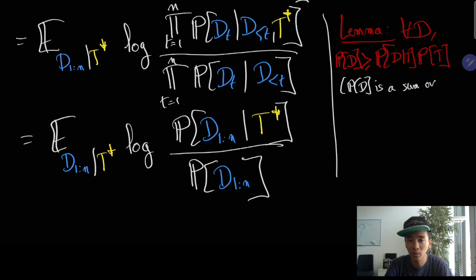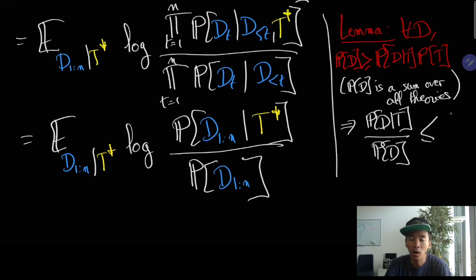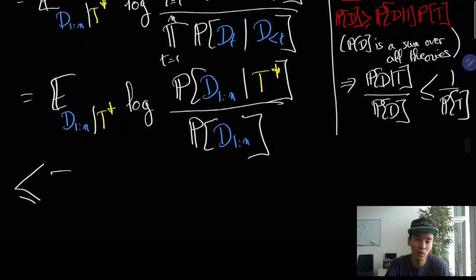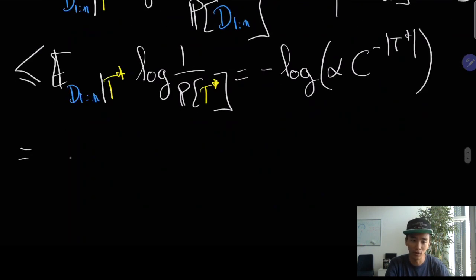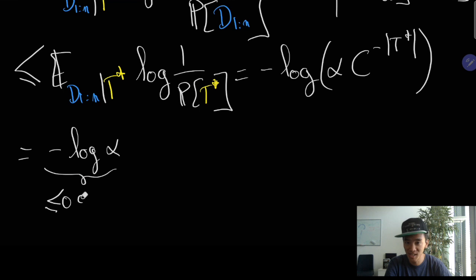And thus the ratio that we considered is necessarily at most 1 over the probability of T star according to Solomonoff's demon. Thus we see that the sum of all errors does not actually depend on the number N that we consider, and it is at most minus the logarithm of the prior probability of T star.